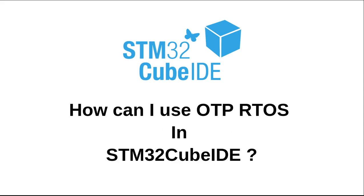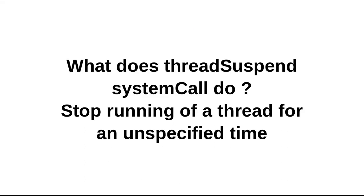The system call is thread suspend. What does the thread suspend system call do? By using thread wait, you can stop running a thread for a specified time — for example 500 milliseconds or 2000 milliseconds. But by using thread suspend, you can stop running a thread for an unspecified time.